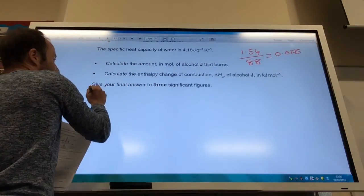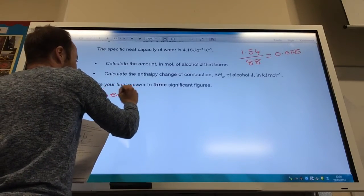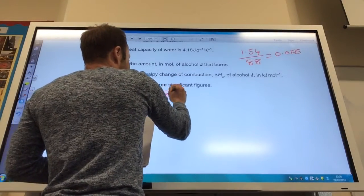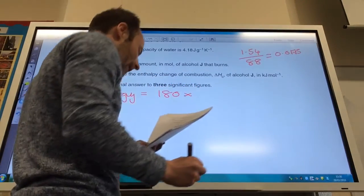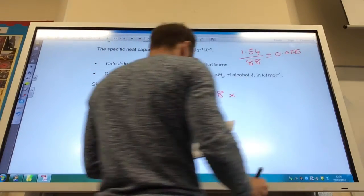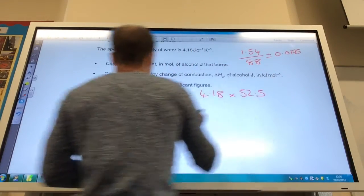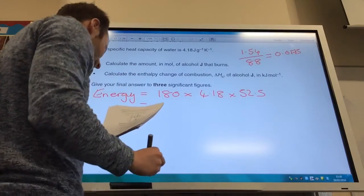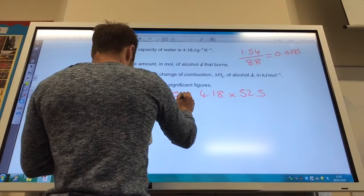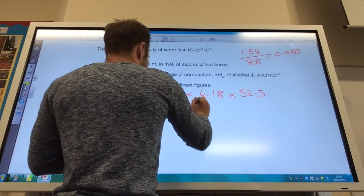Then you want to calculate the enthalpy change. So the energy produced is going to equal my mass of water, which is 180, times that by my specific heat capacity, which is 4.18, times by my temperature change, which is 52.5 degrees C.